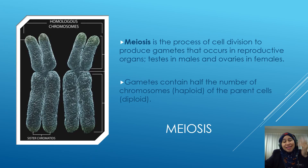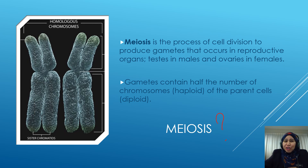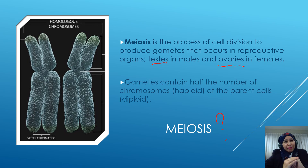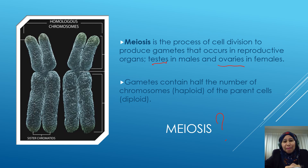What is meiosis? Meiosis is a process of cell division to produce gametes that occur in reproductive organs. The reproductive organs are the testis in males and ovaries in females. Gametes contain half the number of chromosomes, that is haploid, compared to the parent cell which is diploid.